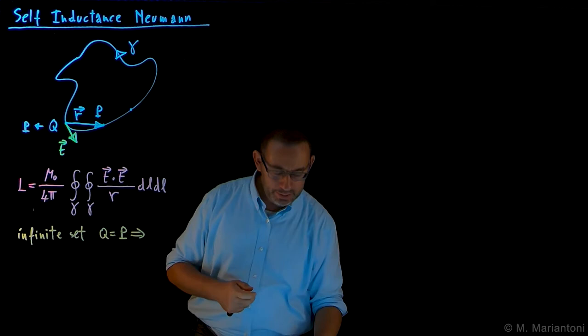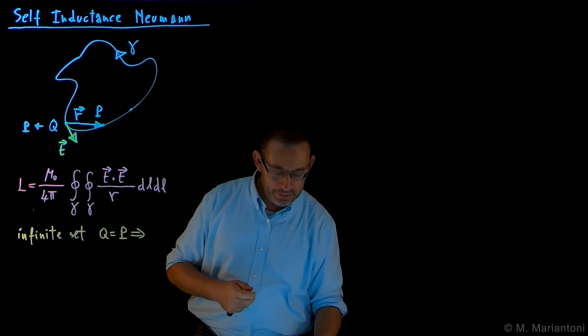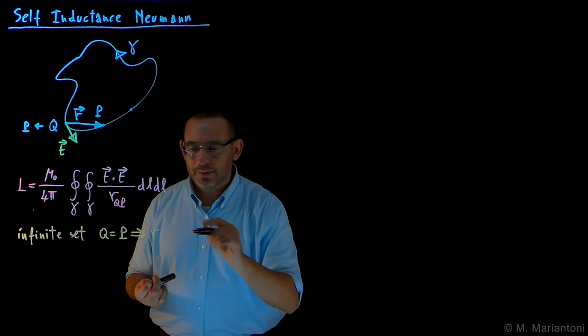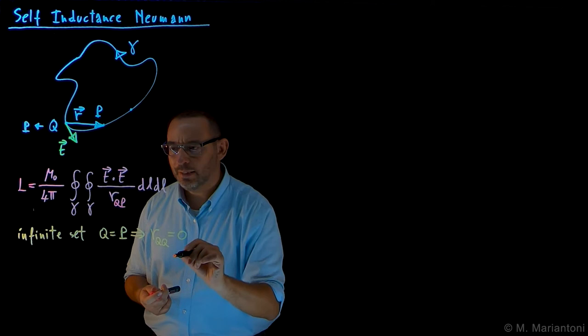If you really want to be precise here, we should have written down here qp. This simply means that the integrand, this rqp which is in the denominator of the integrand, in an infinite set of instances, becomes zero.